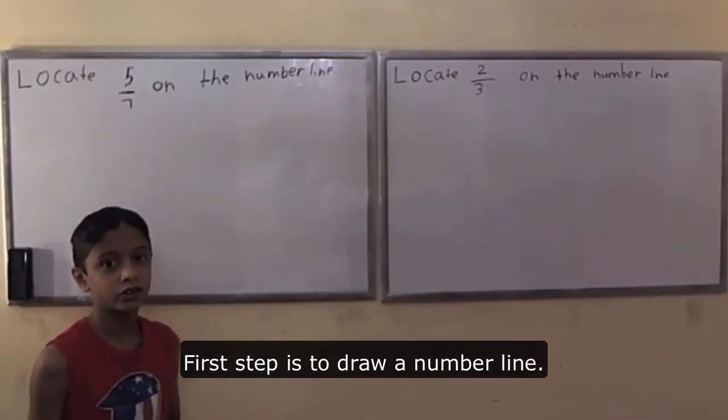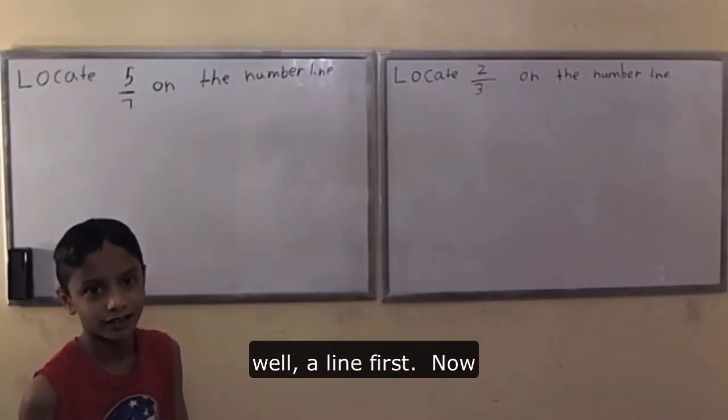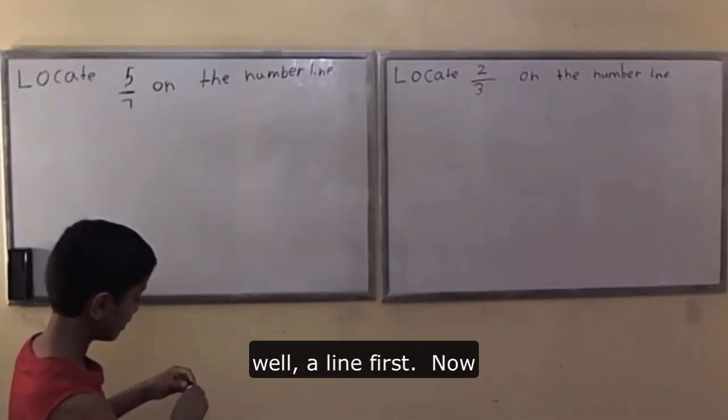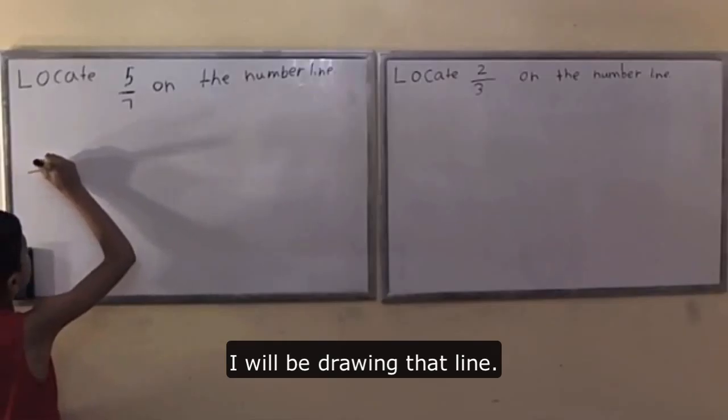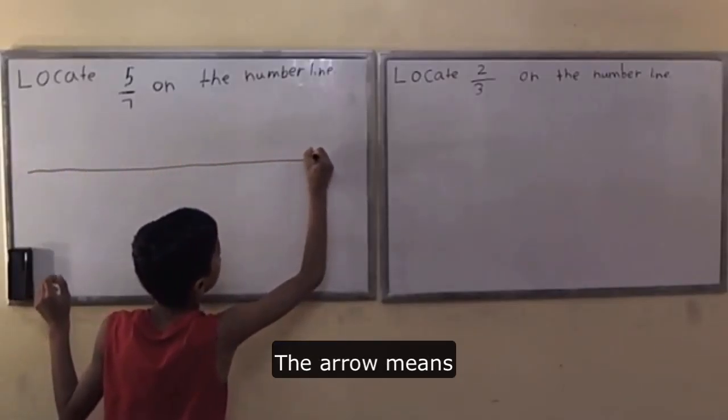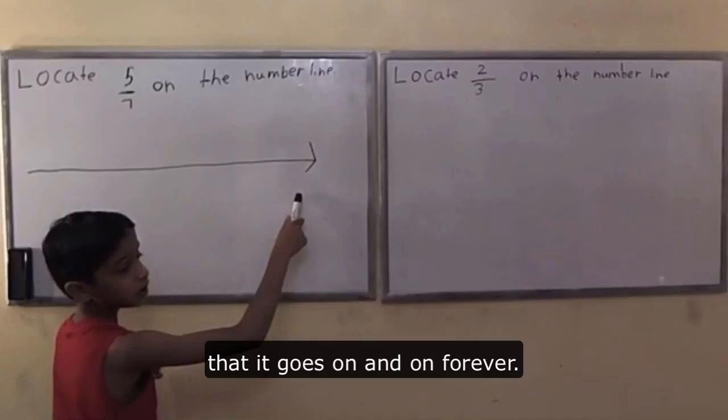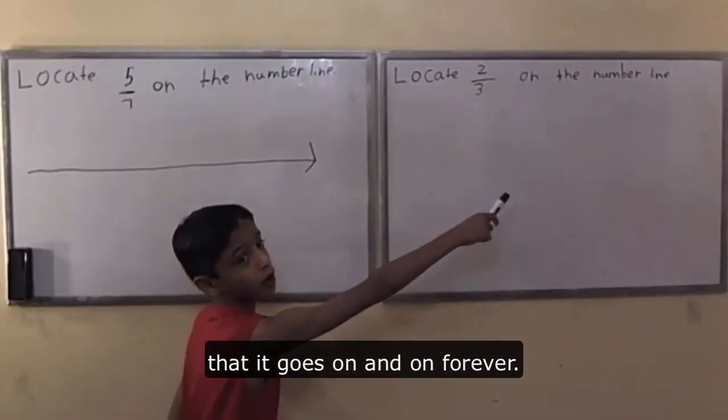First step is to draw a number line. Well, a line. First, I'll be drawing that line. The arrow means that it goes on and on forever.